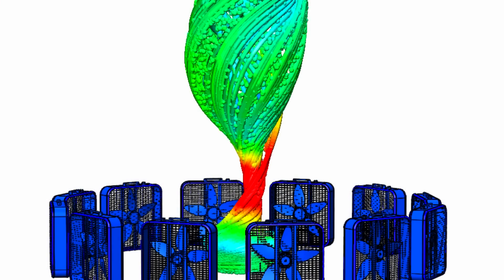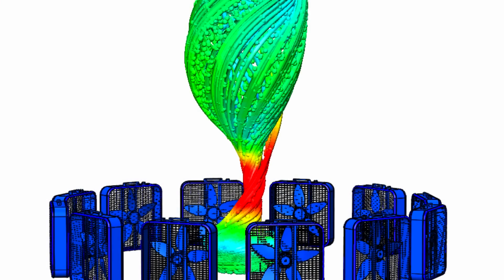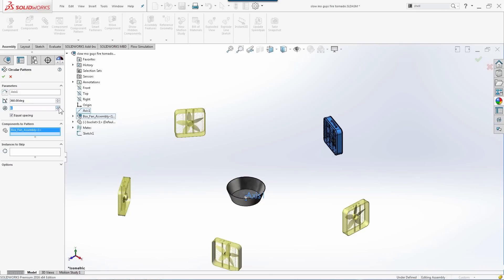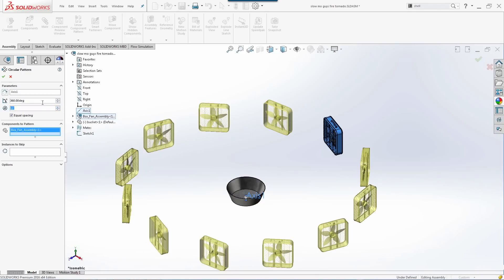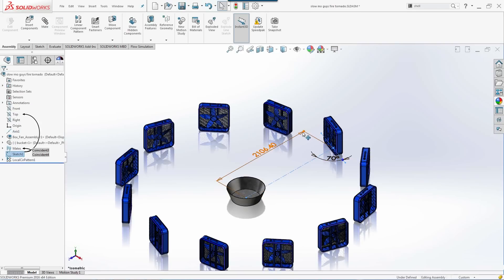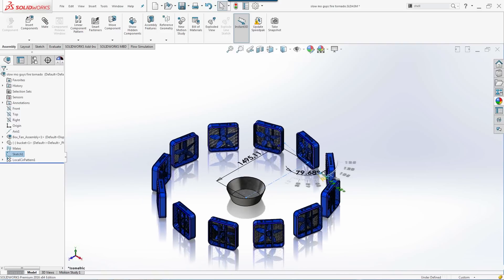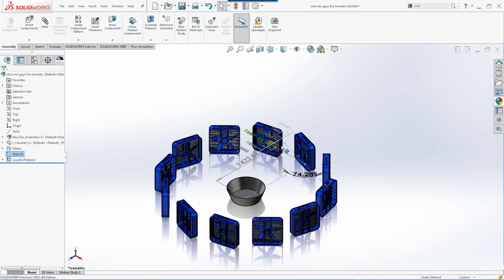Of course, the first step in a digital simulation is having a computer model of the system. Here I'm creating a circular pattern of my fans to get my 12 box fans. I also have a parametric definition, meaning that I have a number that controls the angle offset from perpendicular.